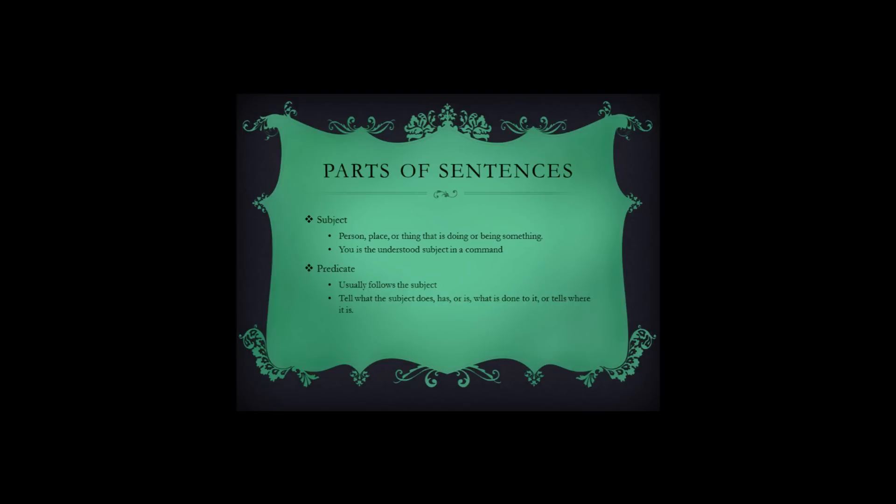Parts of sentences. In a sentence, there is a subject and a predicate. The subject is a person, place, or thing that is doing or being something. 'You' is the understood subject in a command. Predicates usually follow the subject and tell what the subject does, has, is, what is done to it, or where it is.